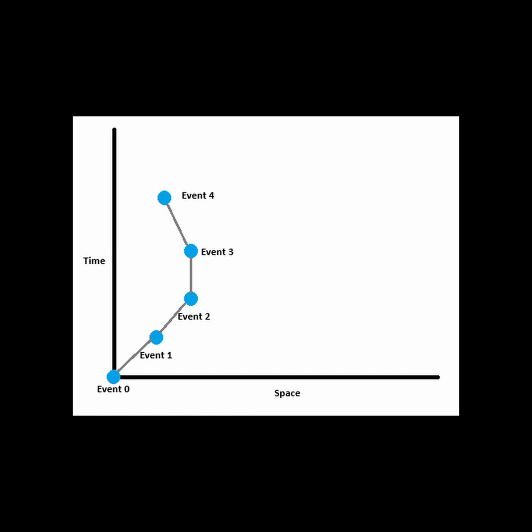We can also travel through a series of events, one after the other, in a chain such that it creates a path through spacetime. We call this the world line.